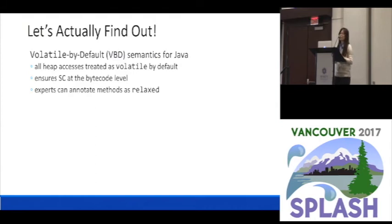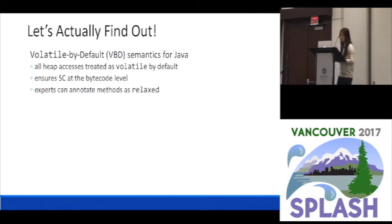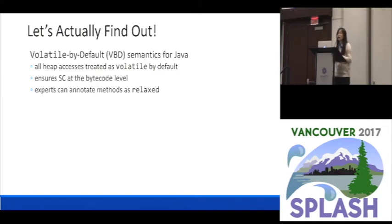Here is our contribution. First, we propose a volatile-by-default semantics for Java, which follows the safe-by-default principle of Java. In this semantics, all heap accesses are treated as volatile by default, and that's how you can have sequential consistency at the bytecode level. As an escape hatch, experts are allowed to write certain methods and annotate them as relaxed. If you annotate some methods as relaxed in volatile-by-default semantics, it will fall back to the original Java memory model, and heap accesses will not be treated as volatile by default — only the annotated ones will be treated as volatile.